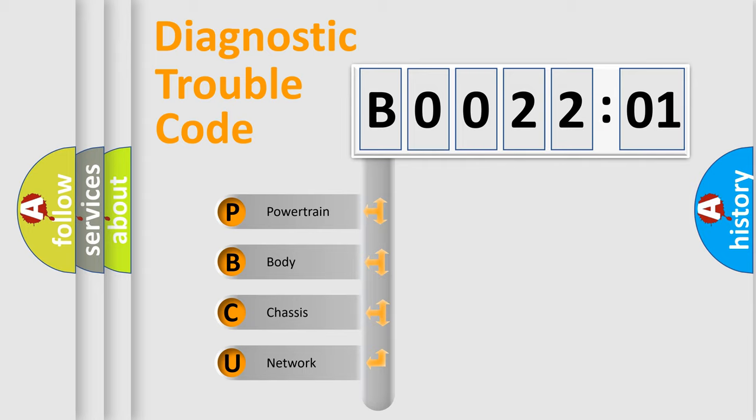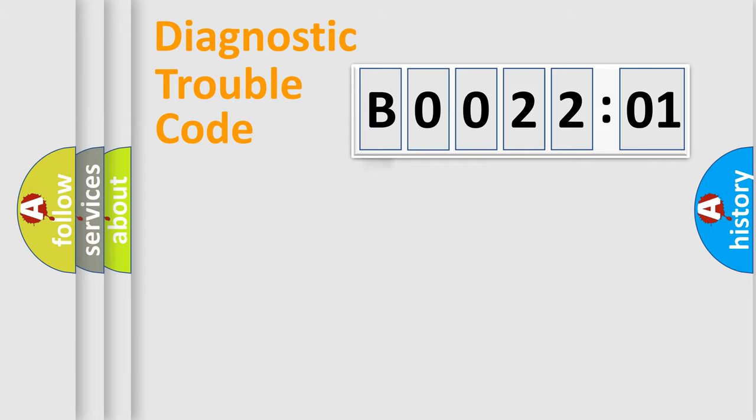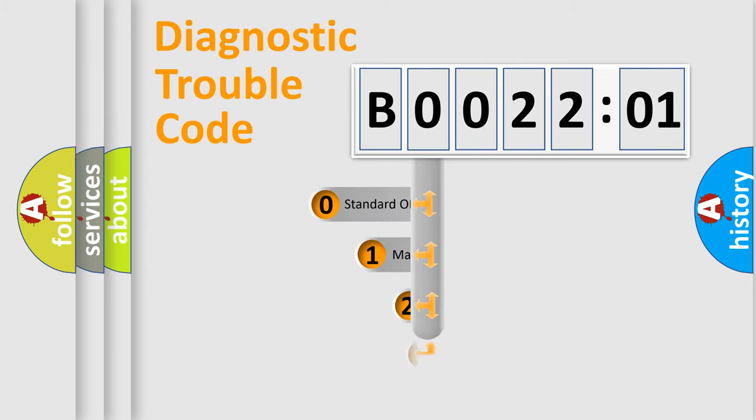We divide the electric system of automobile into four basic units: Powertrain, Body, Chassis, and Network. This distribution is defined in the first character code.